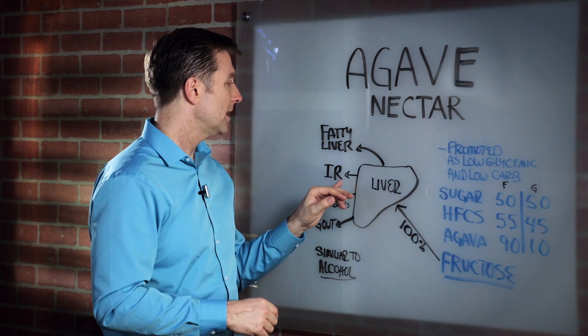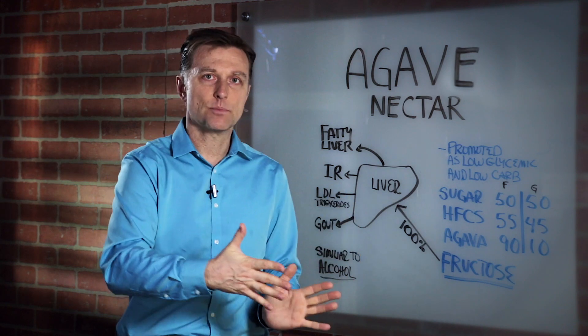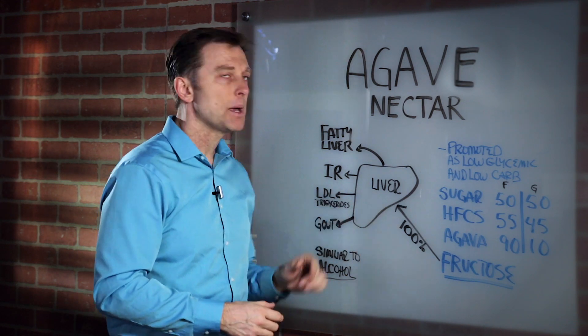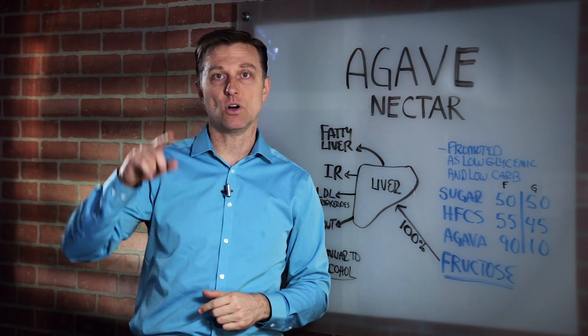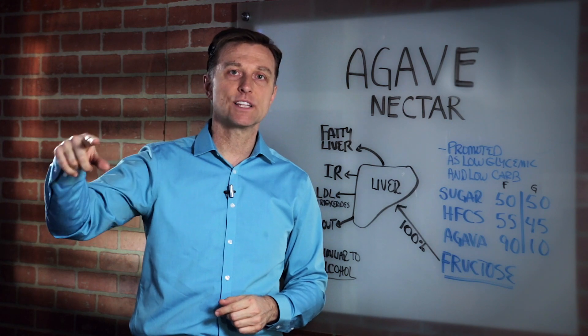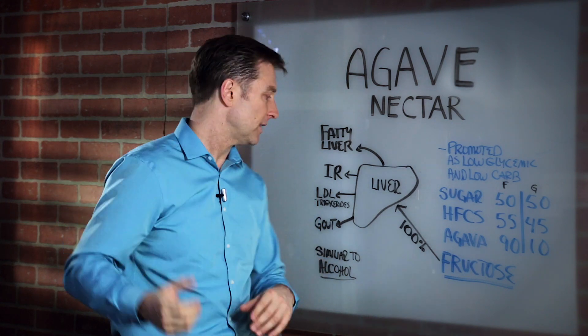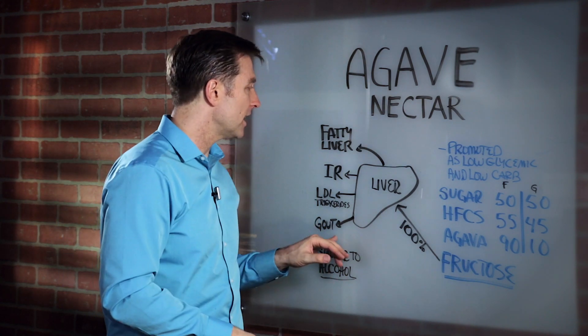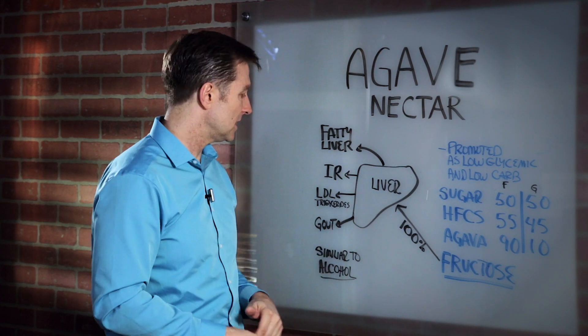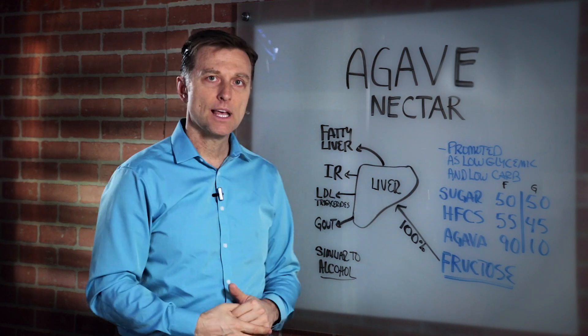It creates fatty liver because that fructose is converted into triglycerides, and it will also cause insulin resistance. So basically, it creates a pre-diabetic state. It creates bad cholesterol — LDL. It creates high triglycerides, which are blood fats. It creates high uric acid, which turns into gout.